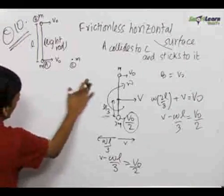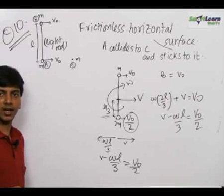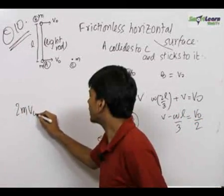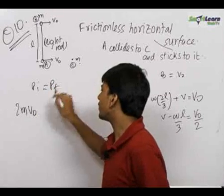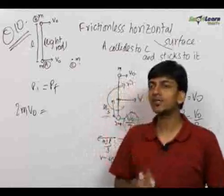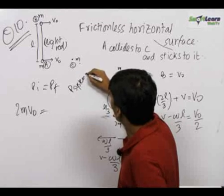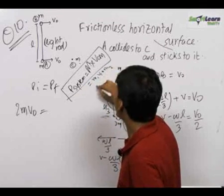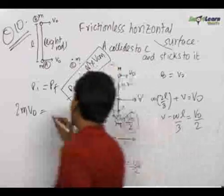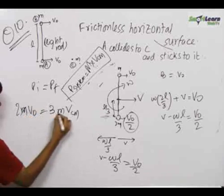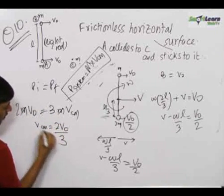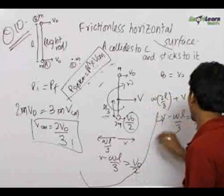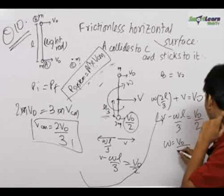Alternatively, since the whole system experiences no external force in the horizontal direction, the total momentum is conserved. The initial momentum is 2mV0 (the small mass C was at rest). Using the formula: total momentum = total mass × Vcm, we get 2mV0 = 3m × Vcm, so Vcm = 2V0/3. Substituting this V back into either equation gives omega = V0/(2L).